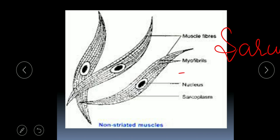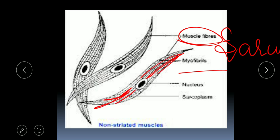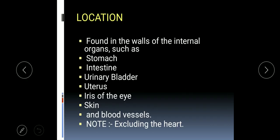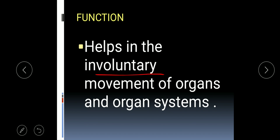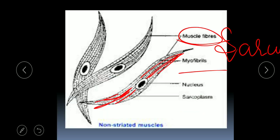Myofibril, or muscle fiber, is the basic rod-like structural unit of the muscle cell. Un-striated muscle is found in internal organs such as the stomach, intestine, urinary bladder, uterus, iris of the eye — the muscle which holds the lens — the skin, and the lining of blood vessels. This muscular tissue is not found in the heart.